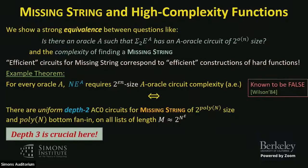We know from relativized work that NE actually has linear-size circuits relative to some oracle. This automatically translates to a depth-2 lower bound for missing string — there are no depth-2 circuits. So you can use various relativized oracles showing surprisingly small oracle circuit complexity to prove lower bounds on missing string.